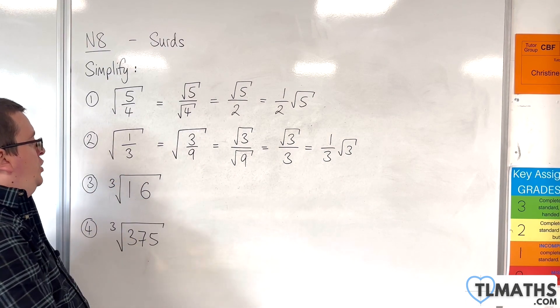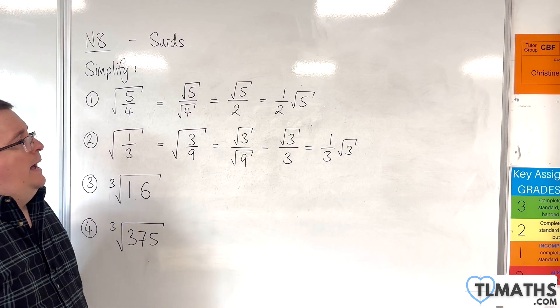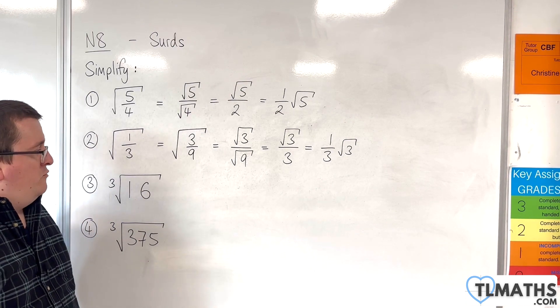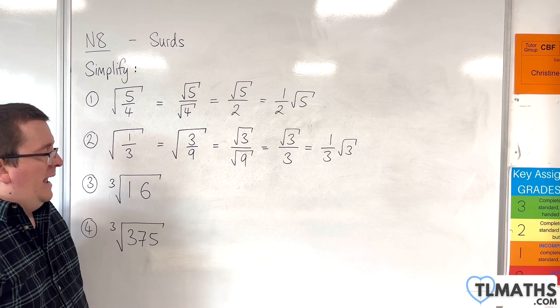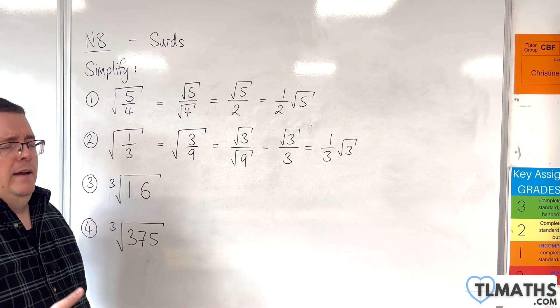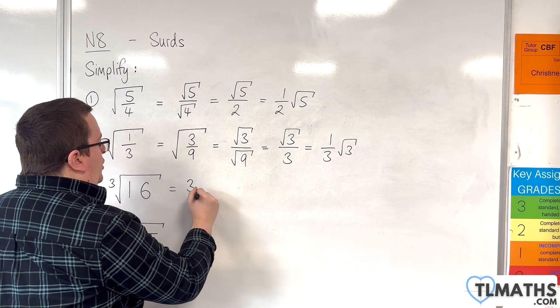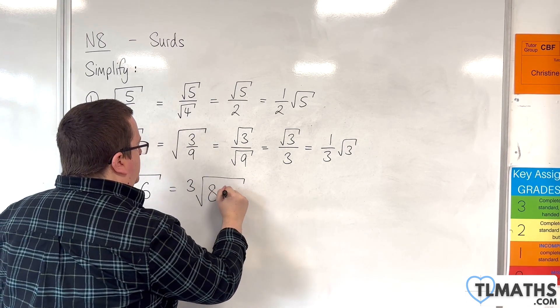Now, number 3, we've got the cube root of 16. So, we're going to go through a similar process that we've done with simplifying square roots in the previous video. And, we're looking now for a cube number that goes into 16. And, that'd be 8. So, I can write the cube root of 16 as the cube root of 8 times 2.